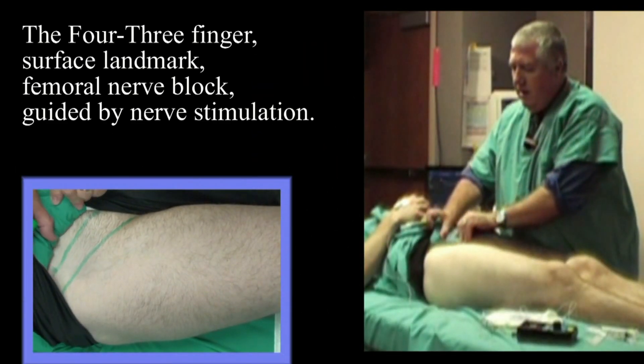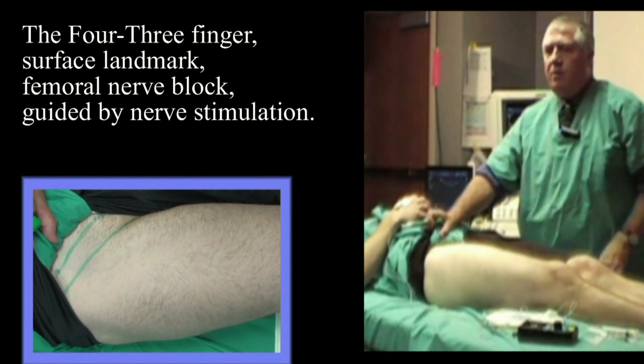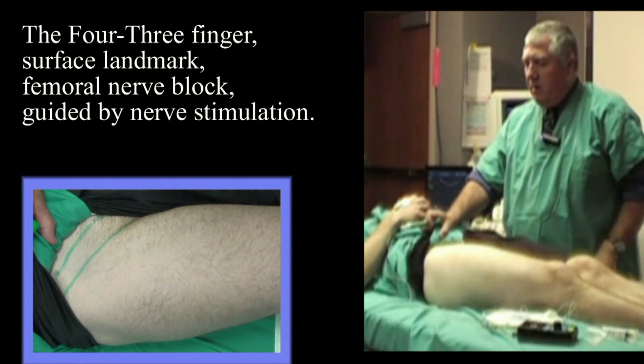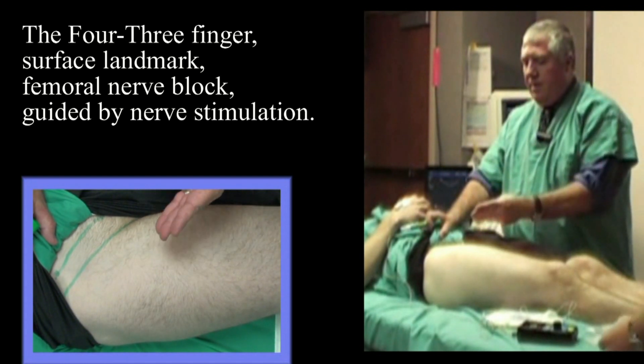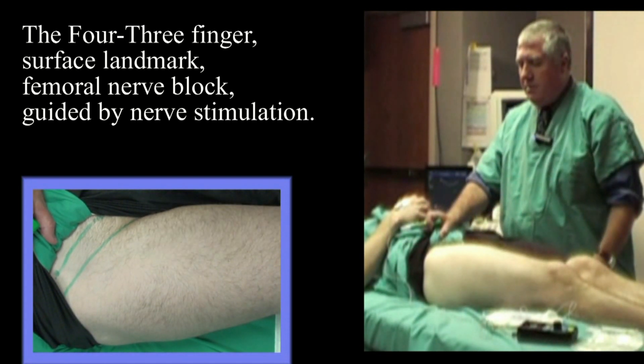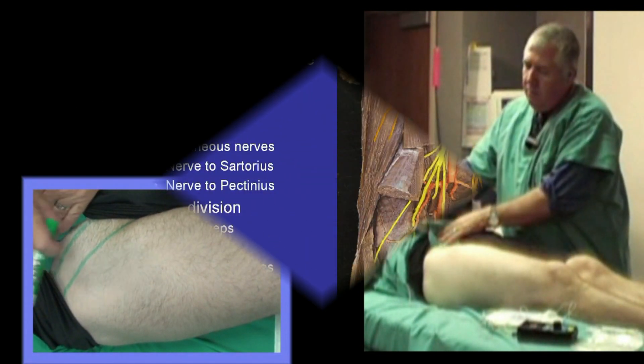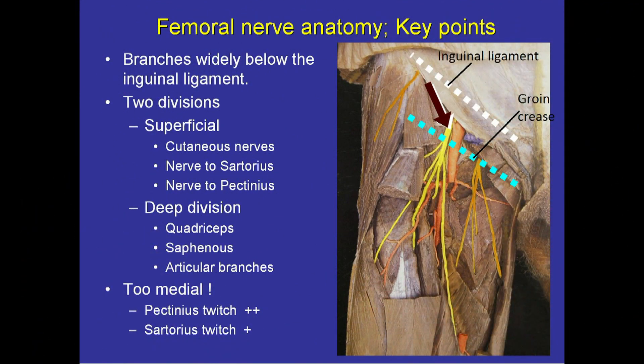We're going to do a single-shot nerve stimulator guided femoral nerve block using the four-three finger surface landmark method. The femoral nerve passes into the leg posterior to the inguinal ligament and lateral to the femoral artery. The nerve also lies in an entirely separate fascial compartment to that of the artery. It is for this reason that peri-arterial nerve block techniques fail to block the femoral nerve.